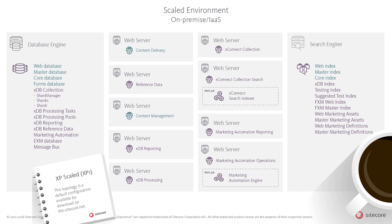For on-premise installations, the SIF configuration files separate the installation of all web roles out individually, but joining the two worker roles — the XConnect Search Indexer and the Marketing Automation Engine — together with the XConnect Collection Search and the Marketing Automation Operations service. This configuration makes it possible to install roles across separate servers, as suggested in the shown diagram.